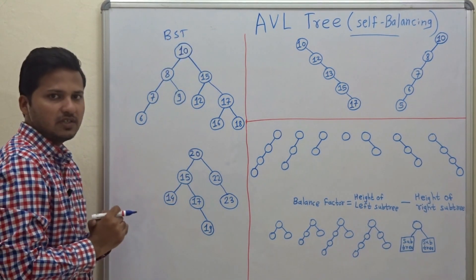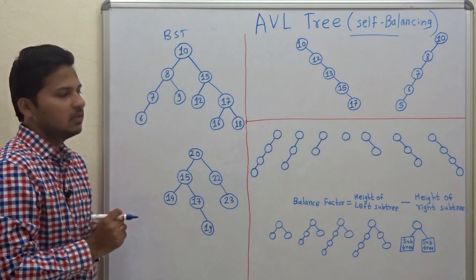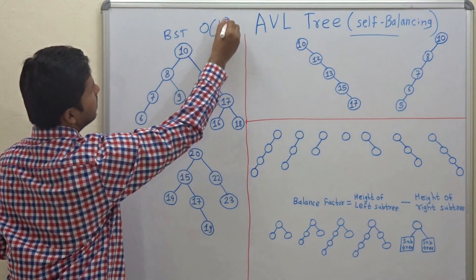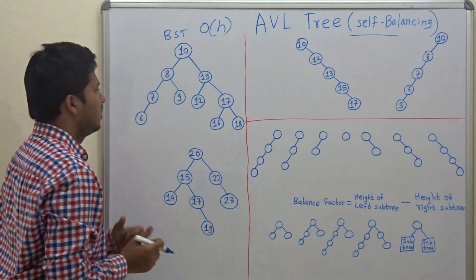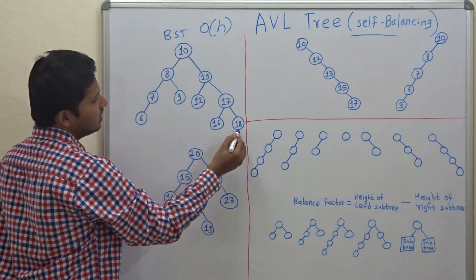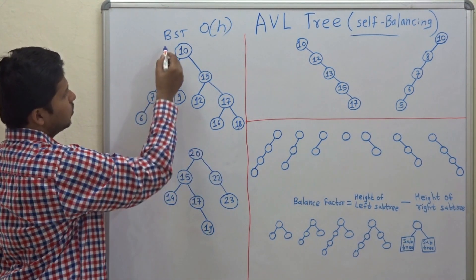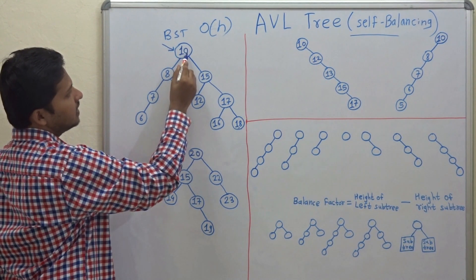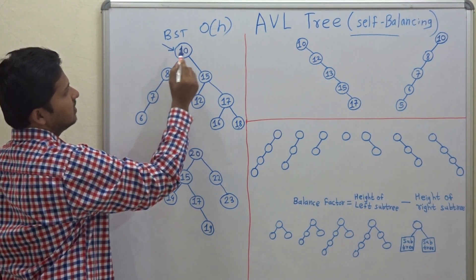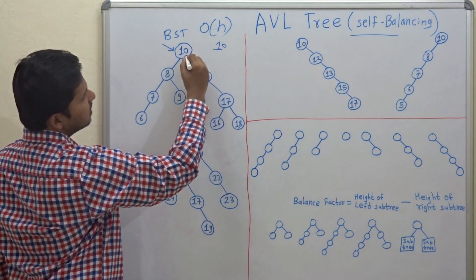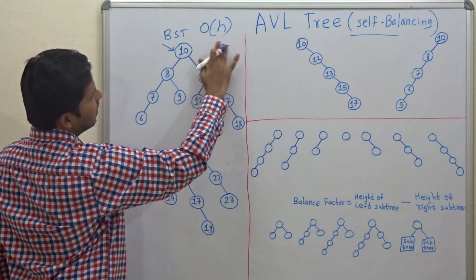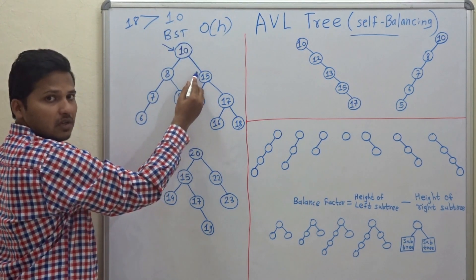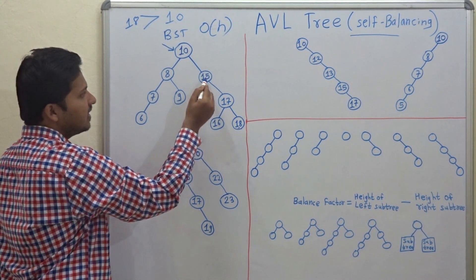In this binary search tree, if you want to search an element, the worst-case time complexity will be O(h), the height of the binary tree. To show why, suppose you want to search 18. You will first compare with the root — root is 10, not 18 — so 18 must be on the right side because 18 is greater than 10. Go to the right side.